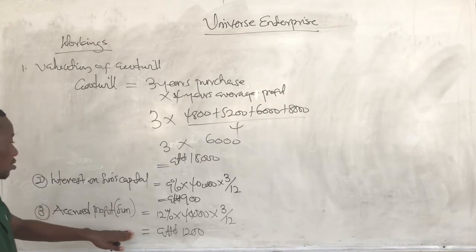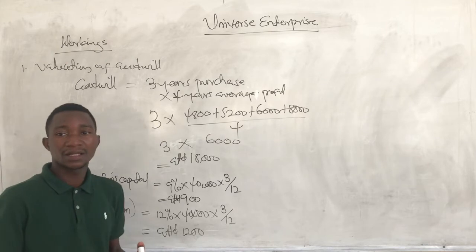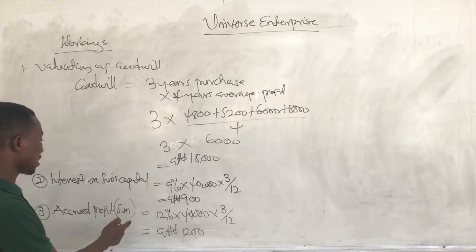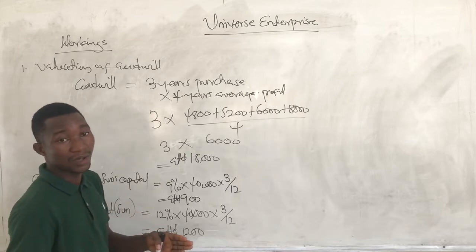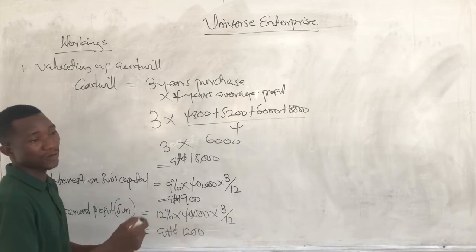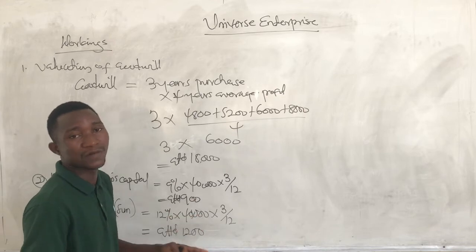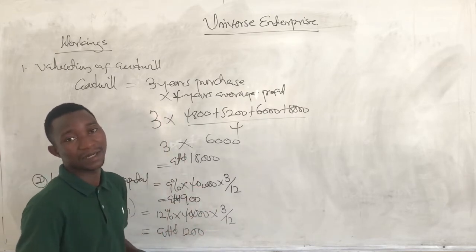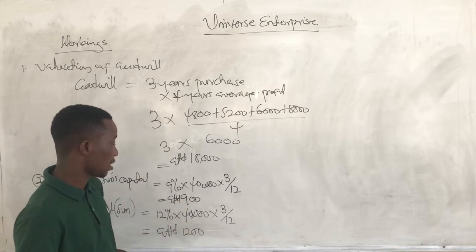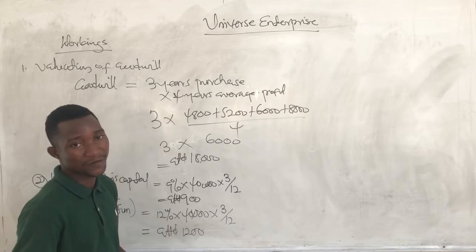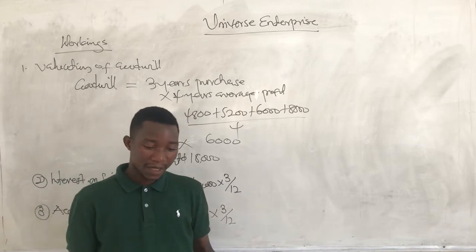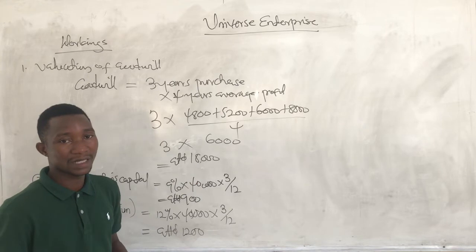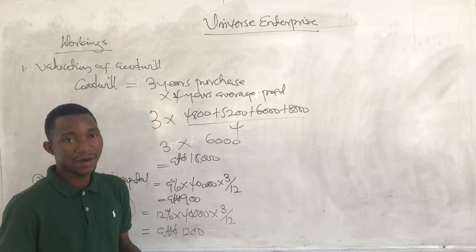This $1,200 is supposed to be given to Sun's estate. Remember that we prepare the final accounts at the end of the financial year, but Sun dies in March, so we haven't yet determined the profit of the business. This amount is to be paid out by the existing partners to the executors of Sun, so that at the end of the period when we ascertain the profit of the business, the part that Sun would have taken will be taken by the existing partners. Now let's prepare the revaluation account.